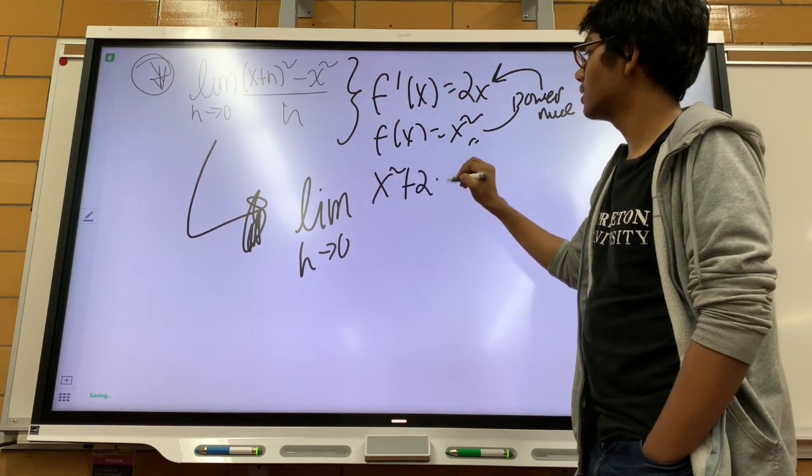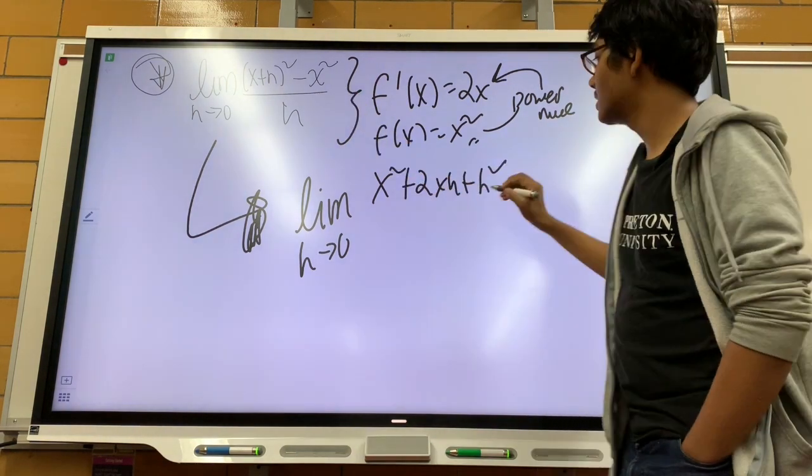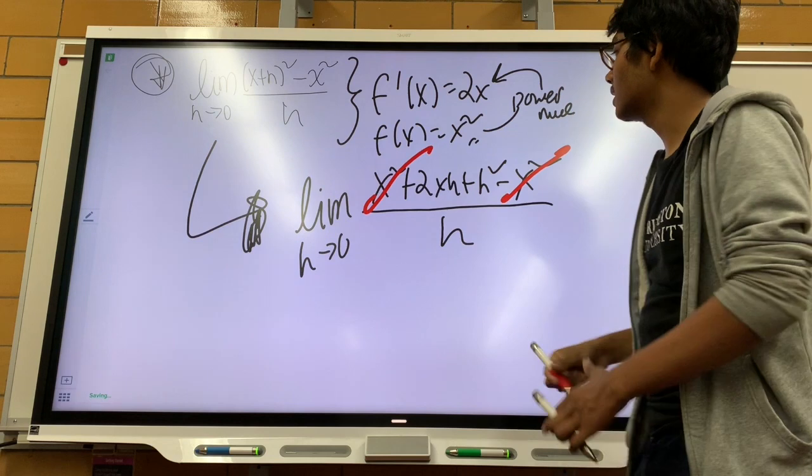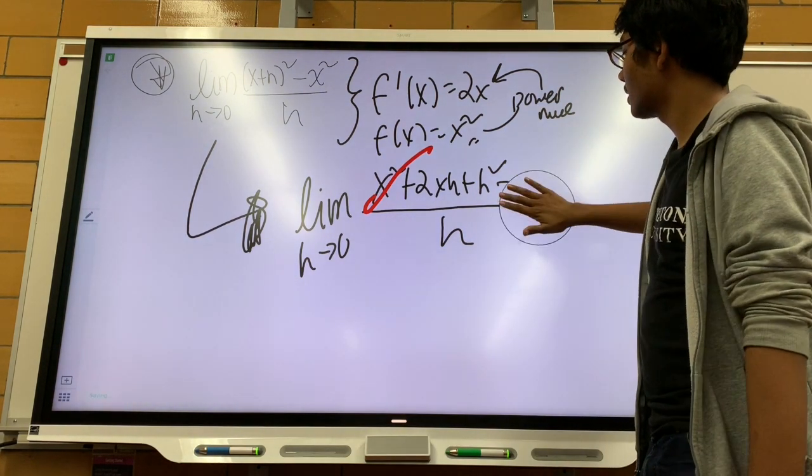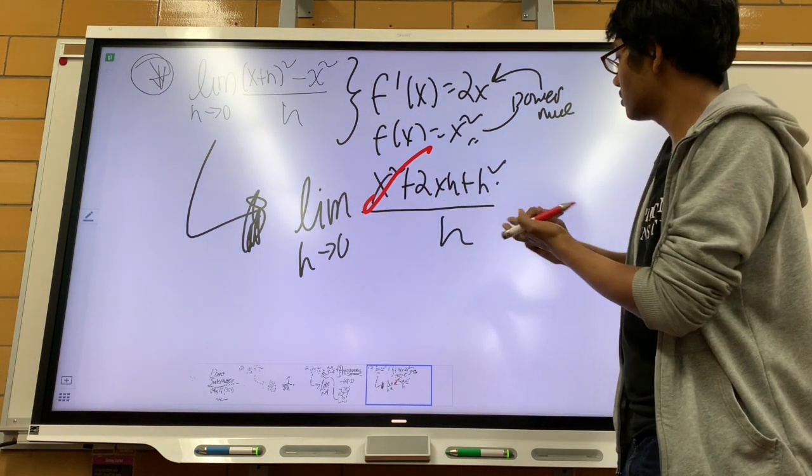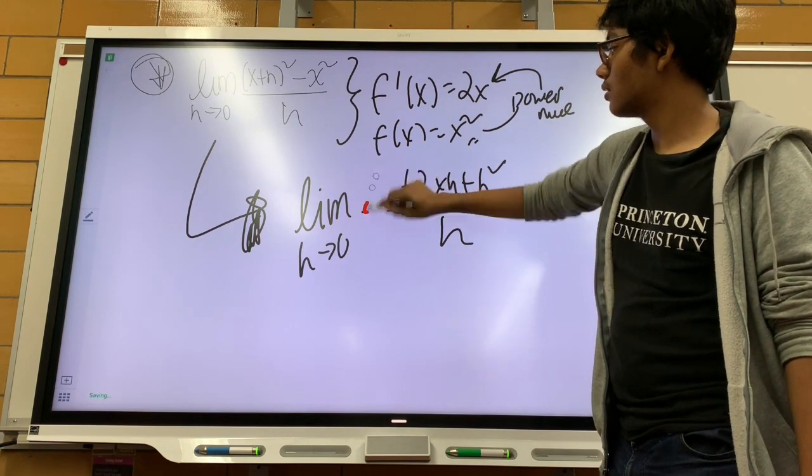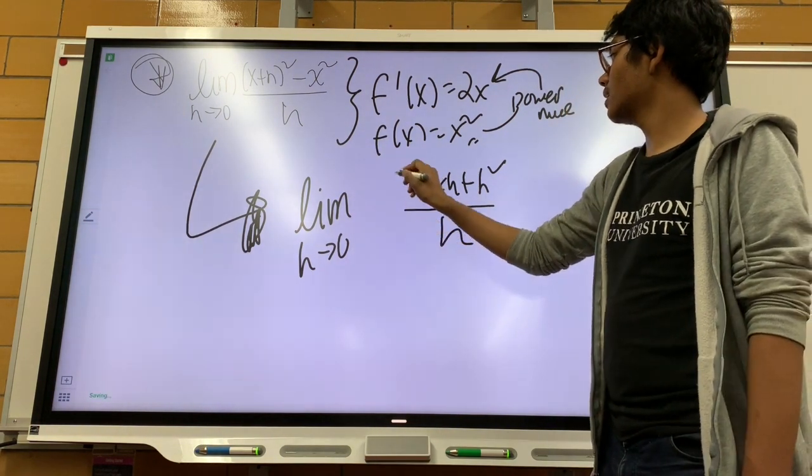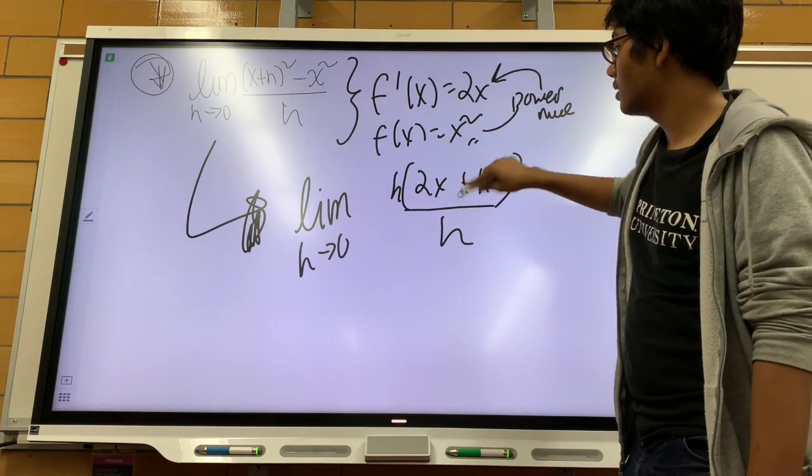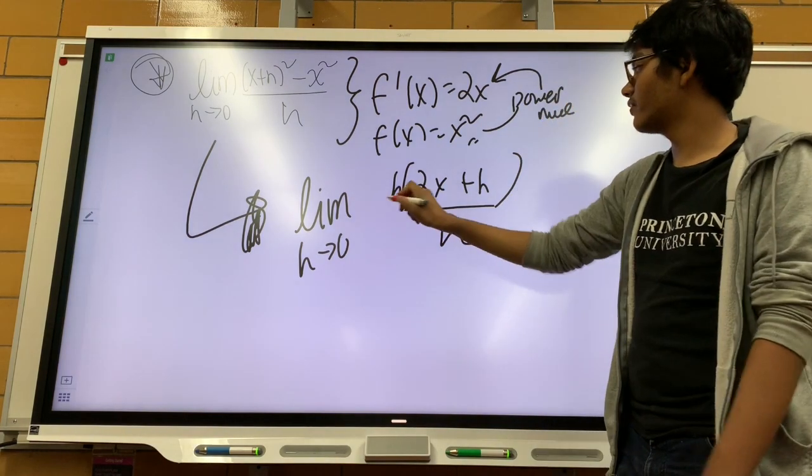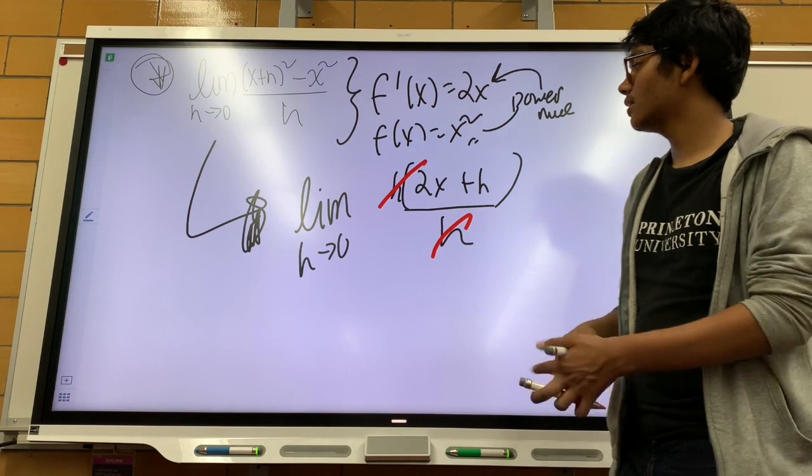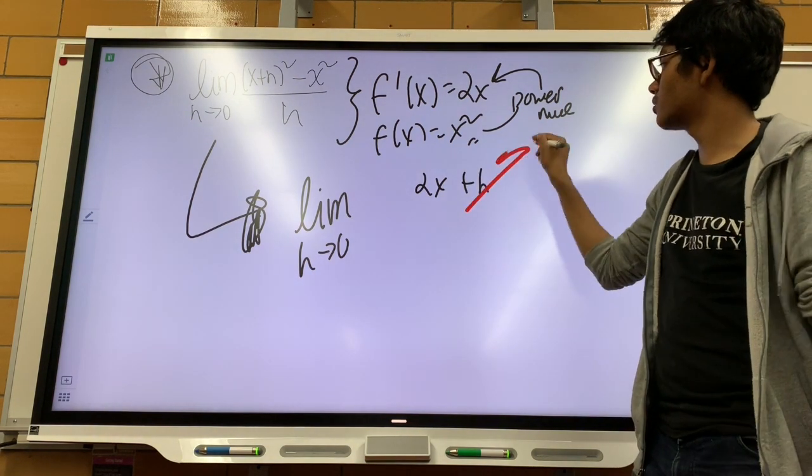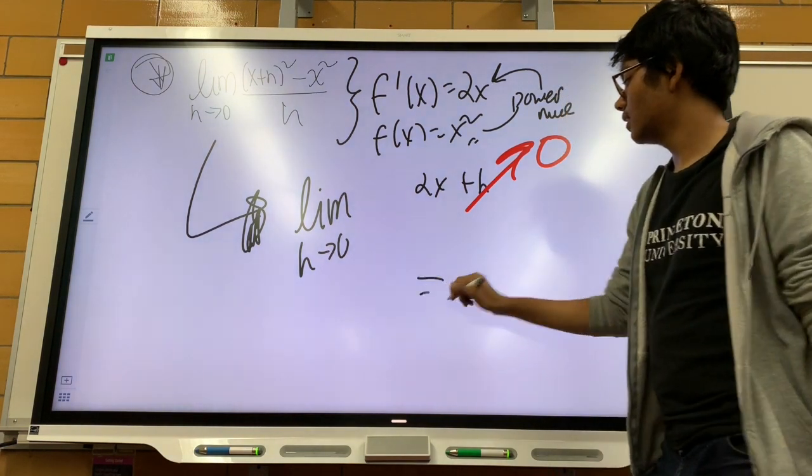The numerator becomes x squared plus 2xh plus h squared. And don't forget this negative x squared over here, all divided by h. Now you see those common x's, so let's cancel these out. And now I'm just left with 2xh plus h squared. So if I just factor out an h over here, I'm going to get h times 2x plus h. And now I can just cancel out this common factor in the top and bottom. And I'm left with the limit as h approaches 0 of 2x plus h. And since h approaches 0, we can just go ahead and disregard this h. So our final answer is 2x.